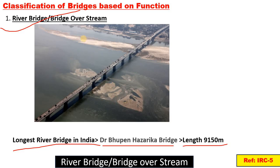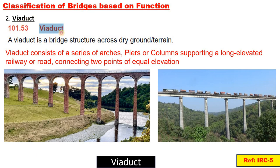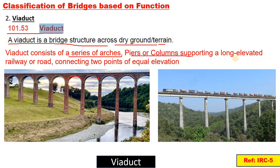This is the longest river bridge in India. Next is a viaduct. As per IRC, a viaduct is a bridge structure across dry ground and terrain. It consists of a series of arches, piers, and columns supporting a long elevated railway, connecting two points of equal elevation. You can see such arches in railway infrastructure.